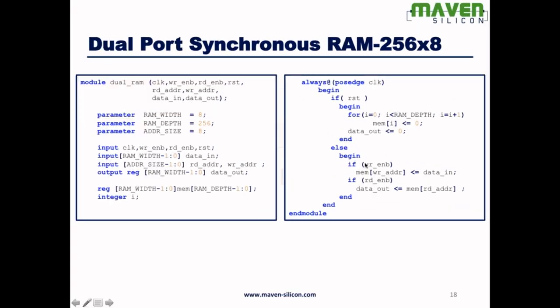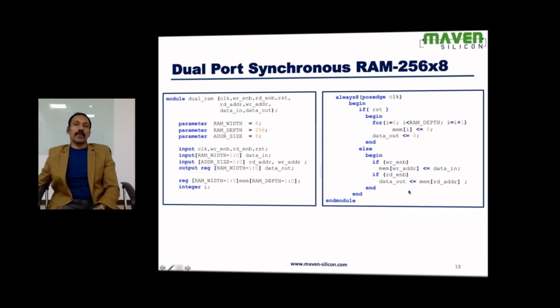If write enable is high, whatever the input data, that will be stored in the particular location and the location depends on the write address. If read enable is high, whatever the value is stored in the memory based on read address, it's going to read that location and the value will be sent to output port data_out.